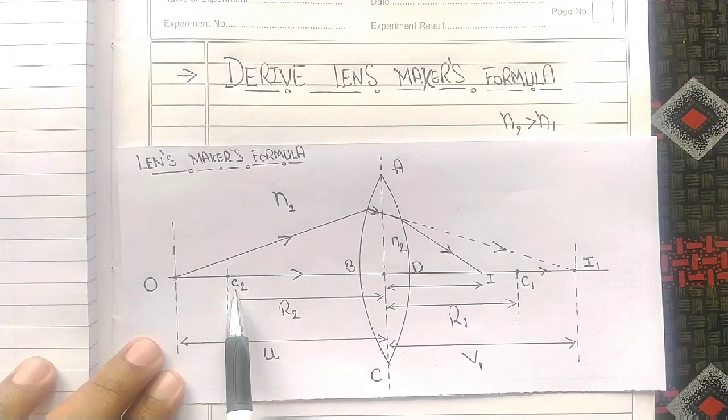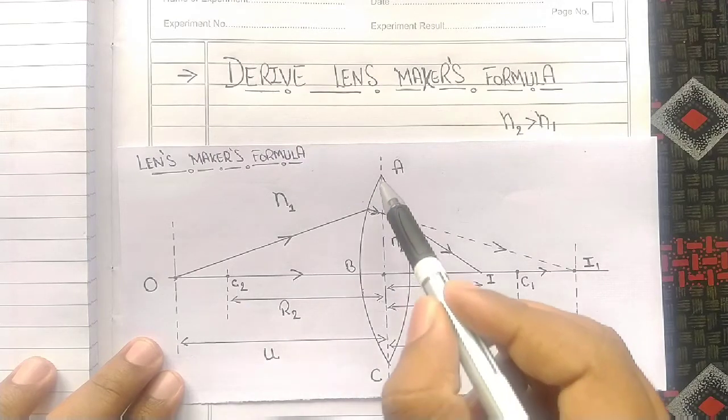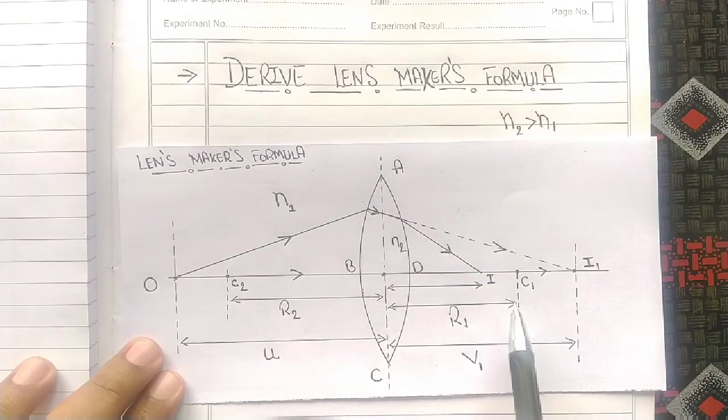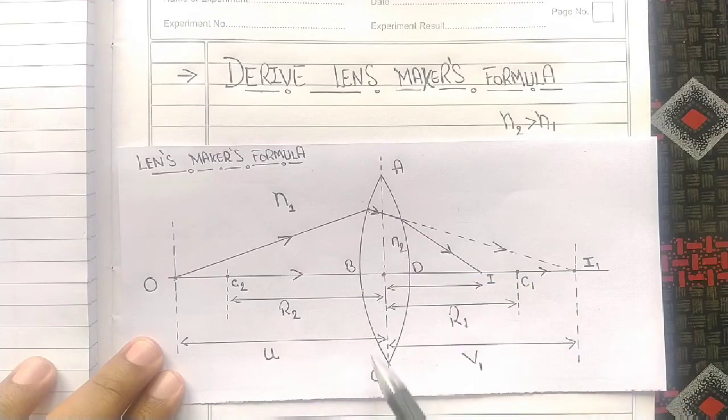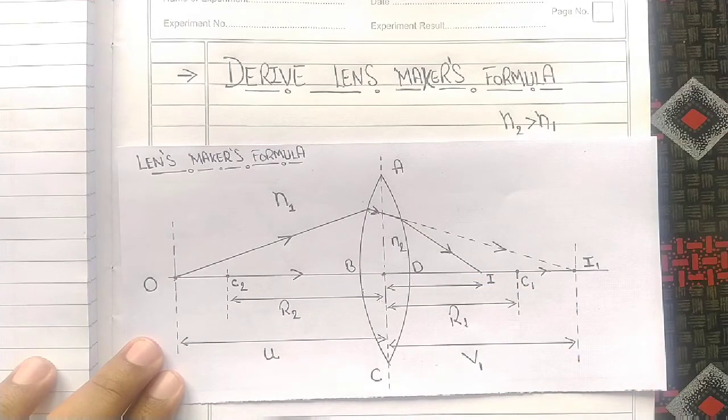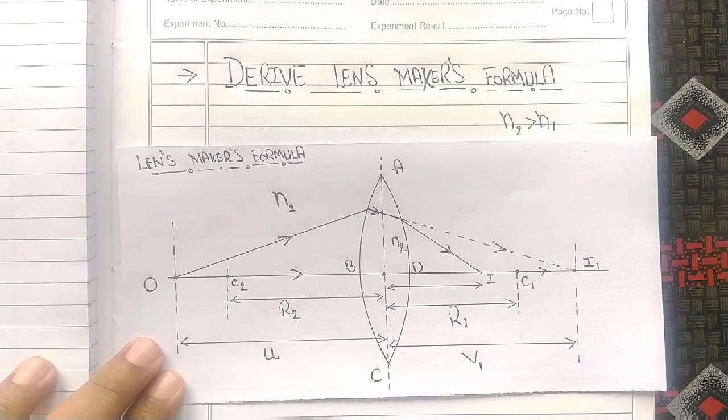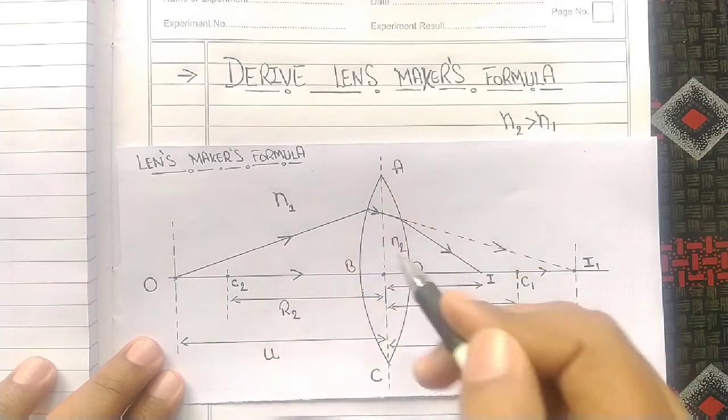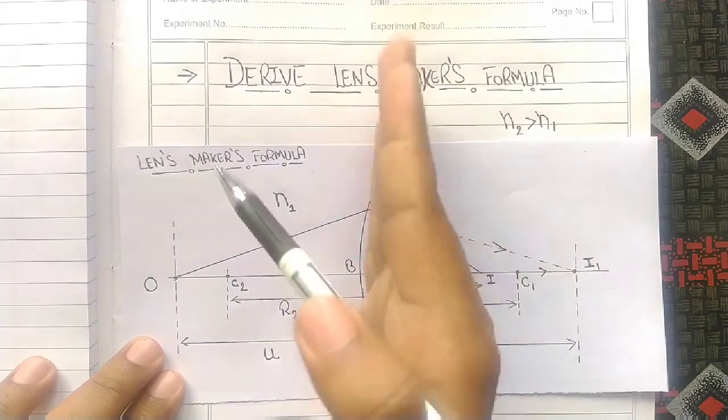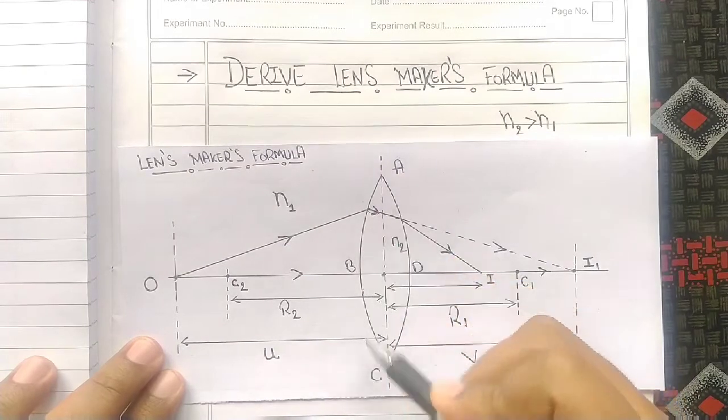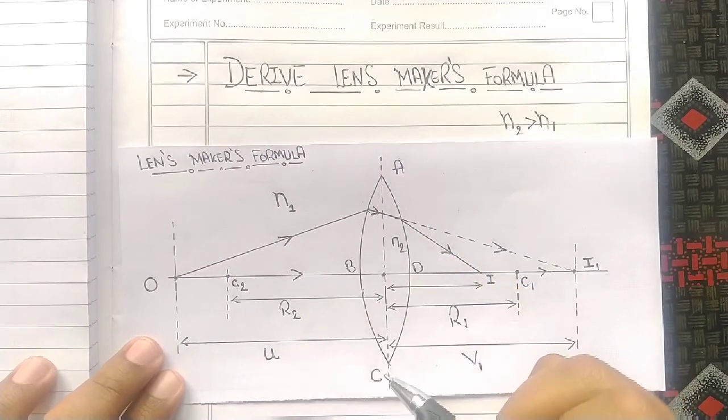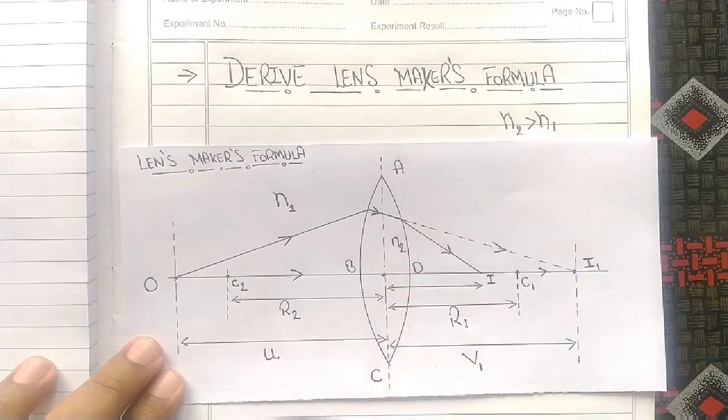C2 is the center of curvature for the second part and C1 is the center of curvature for the first part. The double convex lens is split into two parts, ABC and ADC, for our convenience.